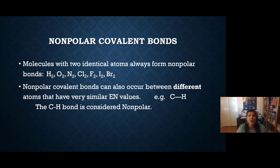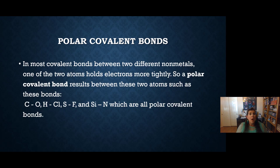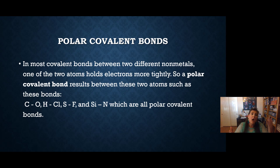Nonpolar bonds can also occur between different atoms that have the same electronegativity values. For example, C and H are also considered nonpolar. So basically, if you're bonded to yourself, you're nonpolar, or if you're C-H, you're nonpolar. Polar covalent bonds are between two different nonmetals — one of the nonmetals is closer to fluorine and pulls the electrons closer. For example, C-O, H-Cl, S-F, and Si-N are all two different nonmetals, so those are polar covalent bonds.